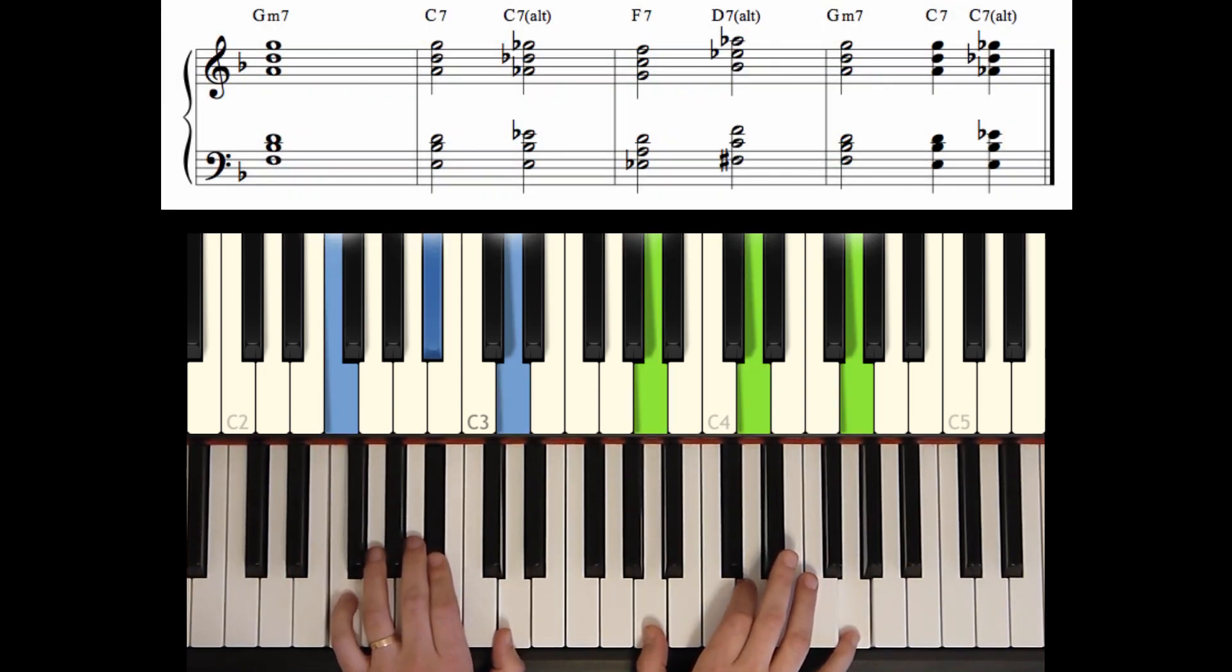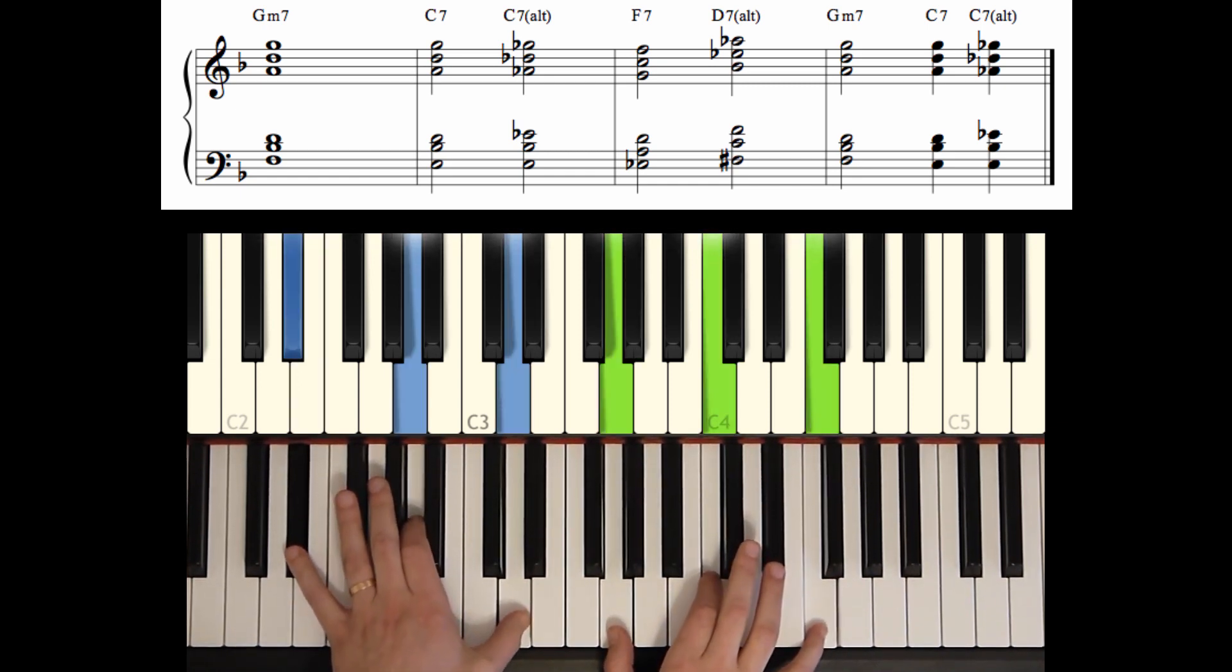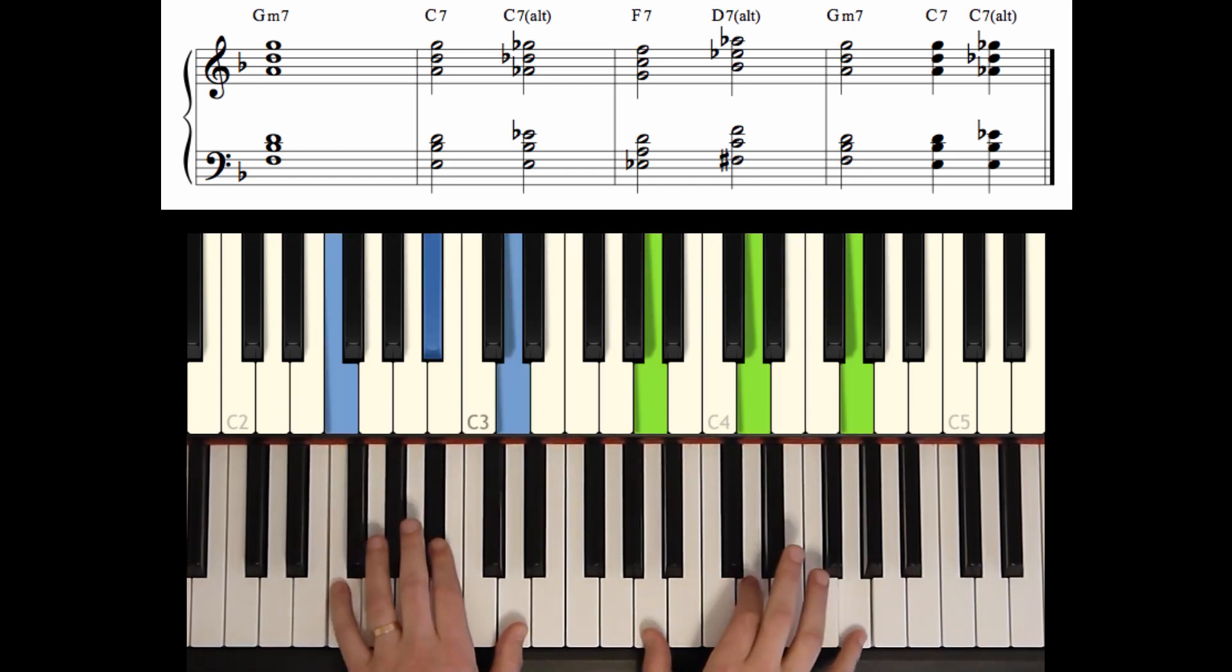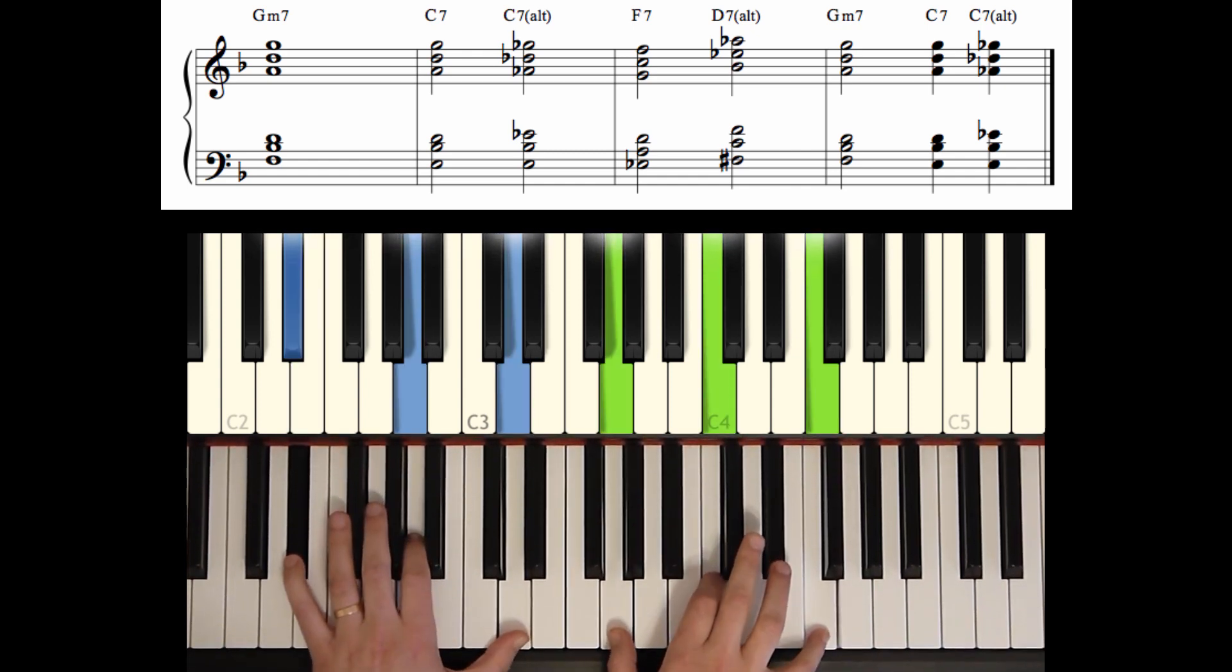C7 altered, or we can add the C7 altered in addition to the regular C7. That would sound like this. G minor 7, C7, C7 alt, F7, D7, G minor, C7, C alt. So it's two different ways we can apply that nice altered voicing for our C7.